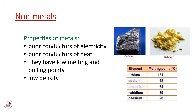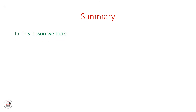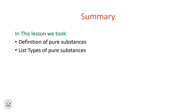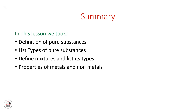This is the end of our chemistry lesson today. If you have any questions on the worksheet, do not hesitate to contact me. In this lesson we covered the definition of pure substances, listed the types of pure substances, defined mixtures and listed their types, and finally listed the properties of metals and non-metals.